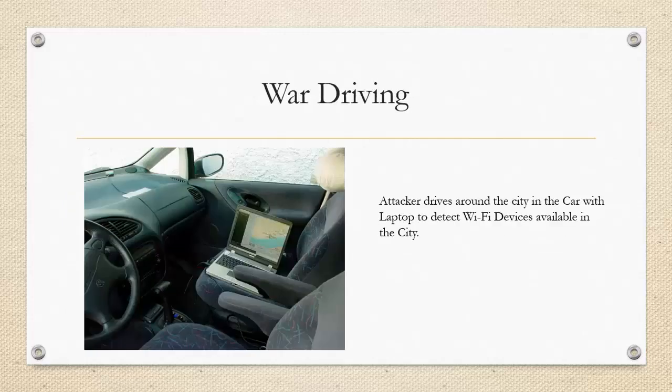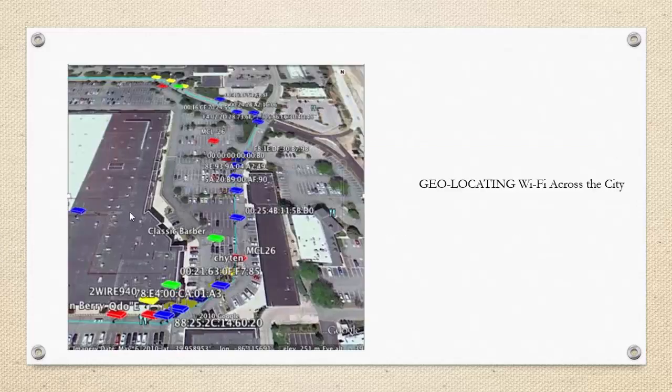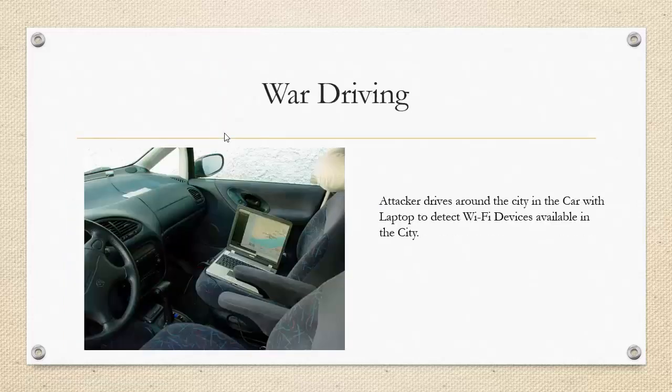The next technique is called war driving. War driving is where an attacker or analyst puts his laptop along with the wireless adapter in his car and drives around the city. Once he does that, he uses the available information, maybe through Kismet, to map the wireless devices throughout the city. In this picture you can see an attacker has mapped a lot of wireless devices in his city with their GPS data, and this is exactly what you can do with war driving.